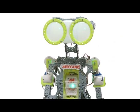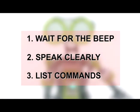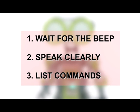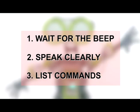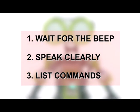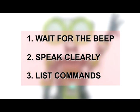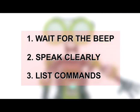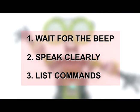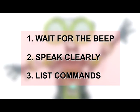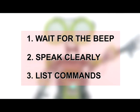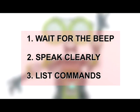Here are some helpful, upfront tips for using voice commands. 1. Always wait for the beep before giving a command. When Mechanoid is talking, Mechanoid cannot hear what you are saying. 2. When giving a command, speak in a clear and steady voice — not too fast, not too slow. Also, don't scream or shout at Mechanoid; he won't hear you any better.